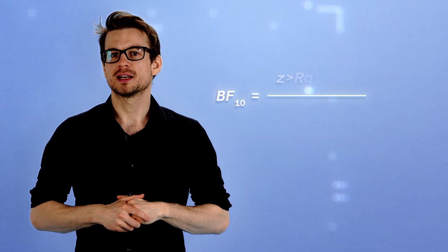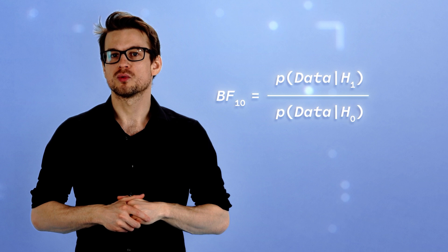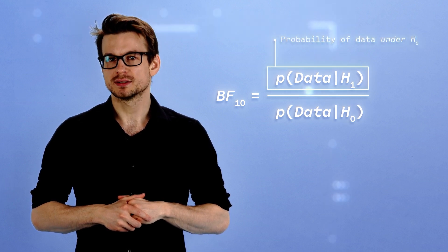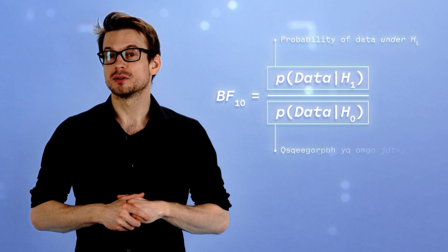This equation is derived from Bayes' theorem and reads that the Bayes factor BF10 is the ratio between the probability of data under the alternative hypothesis H1 and the probability of data under the null hypothesis H0.